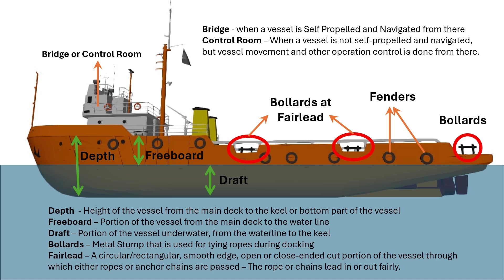The height of the vessel from keel to the deck is called the depth of the vessel. The deck portion that can be seen above water is called freeboard. The portion of the vessel that is underwater is called draught. Depth, freeboard, and draught are measured by length or distance in meters and feet.